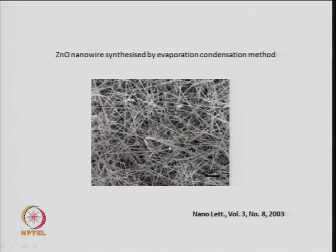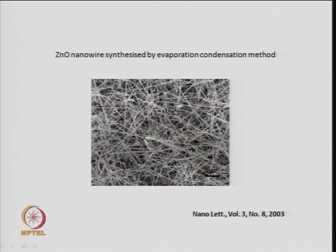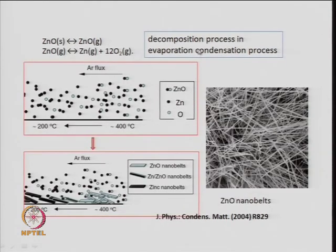A TEM image shows zinc oxide nanowires grown by evaporation-condensation: a large forest of nanowires, unaligned in different directions — consistent with the limitation that growth direction cannot be controlled by this method. This was published in Nano Letters in 2003. Another example uses evaporation-condensation for ZnO: solid zinc oxide is converted to gas phase for subsequent condensation.